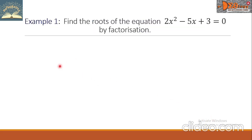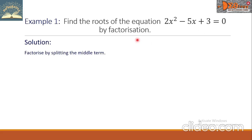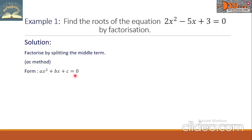Example 1: Find the roots of the equation 2x² - 5x + 3 = 0 by factorization. We factorize this by splitting the middle term — in some books they call this the AC method. Our form is ax² + bx + c = 0 where a = 2, that is the coefficient of x².